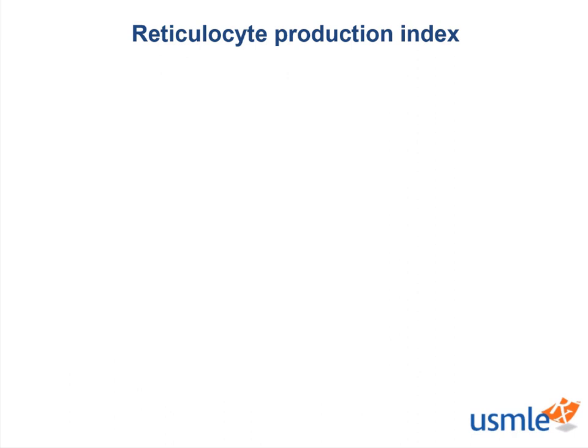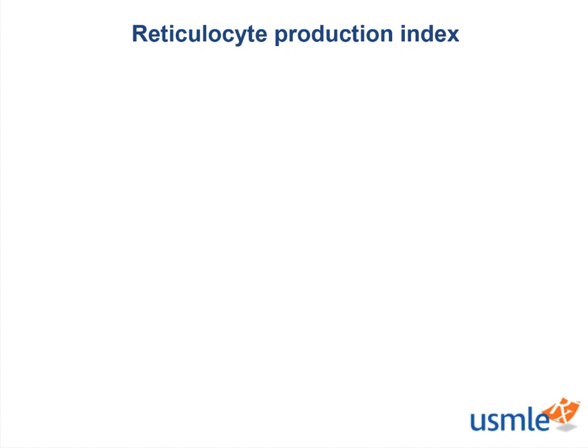Let's think about why we even need a calculator to figure out reticulocyte index. When you look at a CBC differential, reticulocyte count is listed there, but you can't use that value. The reason you can't use it is because the reticulocyte count is essentially diluted — and reticulocyte count isn't an actual count or a number, but rather it's a ratio.